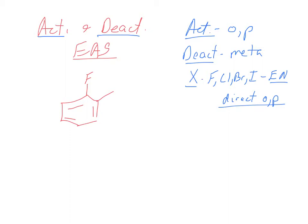Things like fluorine, chlorine, bromine, and iodine, they are deactivating the ring. They take away electrons from the ring, they're electronegative. But they direct ortho and para because they still donate a lone pair. So overall they're deactivators, but they direct ortho and para. They have the ability for resonance. If you can do lone pair resonance, you're going to direct ortho and para.